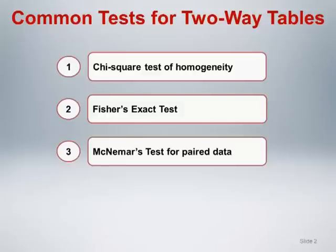The general subject of frequency table analysis is extensive. In many situations, there are multiple tests that may be appropriate for a given frequency table. The choice of test depends on the specific design and research question. Choosing the optimal test is important and can lead to smaller p-values. In some situations, multiple appropriate tests may be equivalent and yield the same p-value, as we will see in our discussion of the chi-square test of homogeneity and McNemar's test.